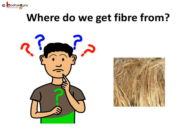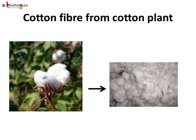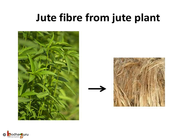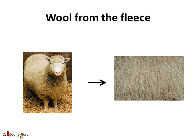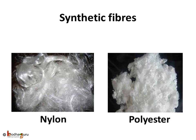The process of making yarn from fibers is called spinning. Now, where do we get the fiber from? We get cotton fibers from the cotton plant. Similarly, jute fiber is obtained from the jute plant. Silk fiber is drawn from the cocoon of the silk worm. Wool is obtained from the fleece of sheep or goat, and even from the hair of rabbits, yak, and camels. Also, synthetic fibers are used to make synthetic fabrics like nylon and polyester.